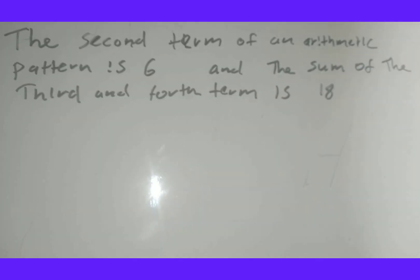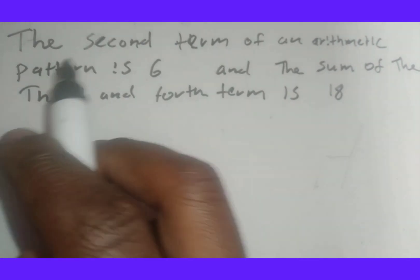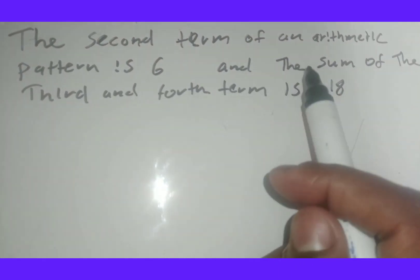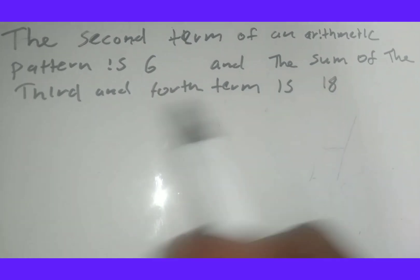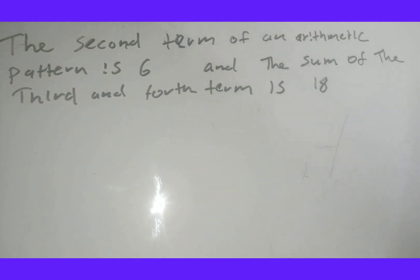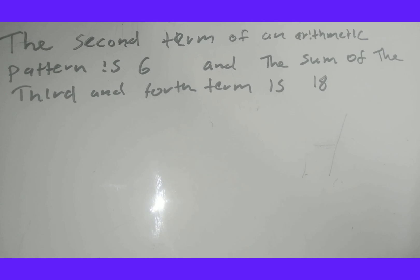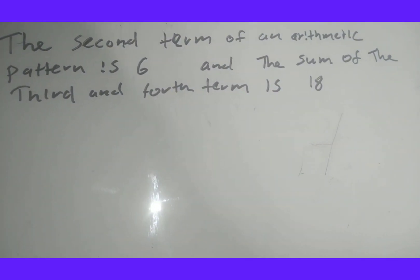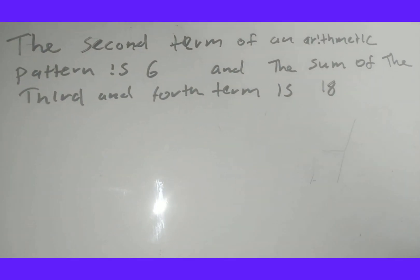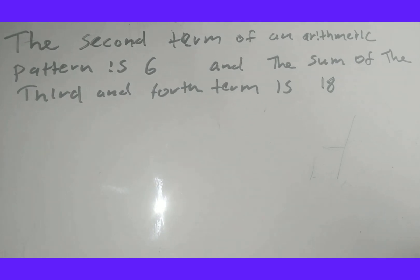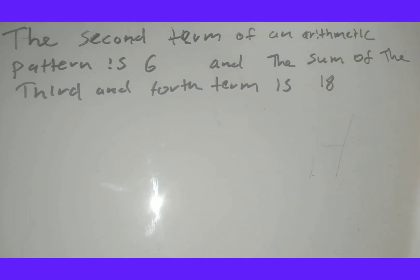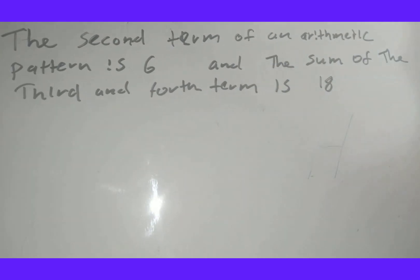Here is the second level. They say the second term of an arithmetic pattern is 6, and the sum of the third and fourth terms is 18. This is higher than what usually comes out in the exam, but it does appear in prelims. This is what I call level two of simultaneous equations.